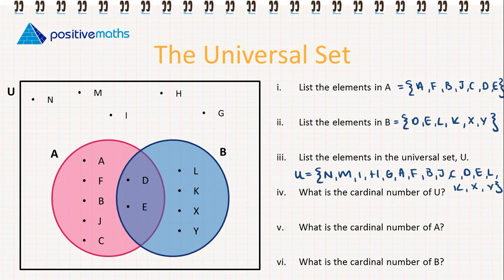Now we're asked for the cardinal number of U. So this is the number of elements in that set. So the cardinal number of U is going to be equal to 16. The cardinal number of A is equal to 7, and the cardinal number of B is equal to 6.